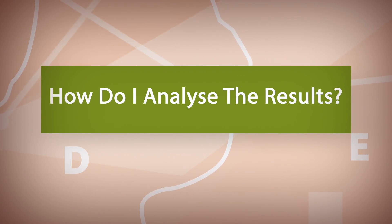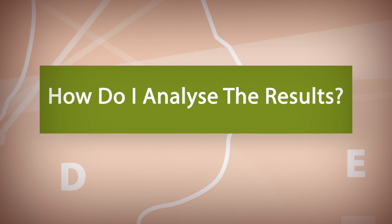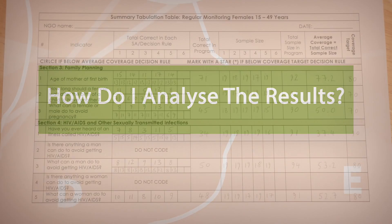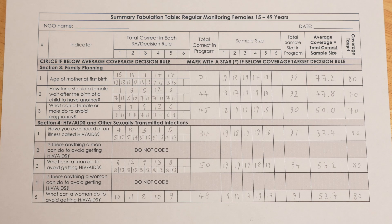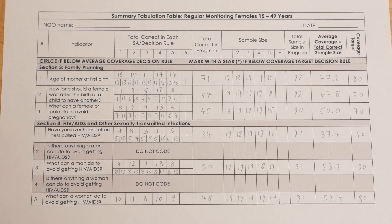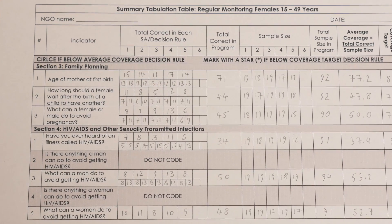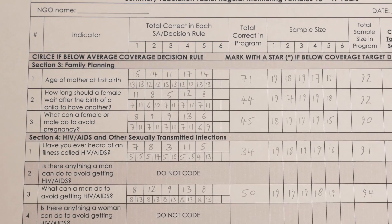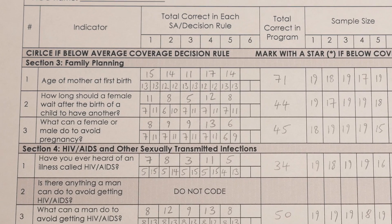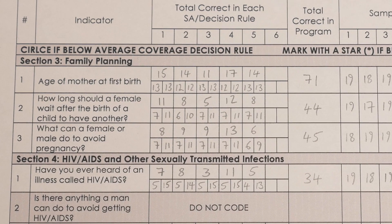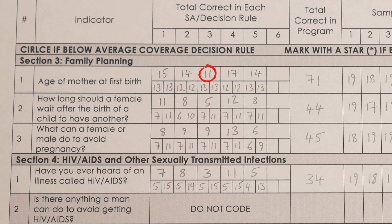How do I analyze the results? Looking at the completed summary table, we can see which are our priority areas. Look for the circled figures — these particular indicators are falling well below the average.